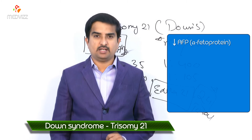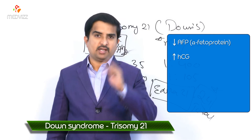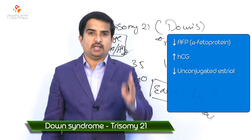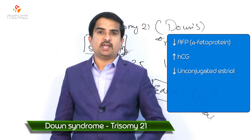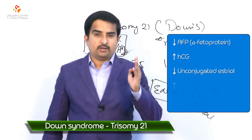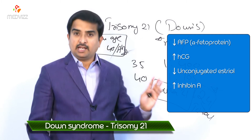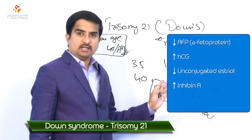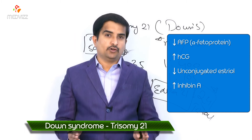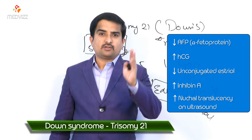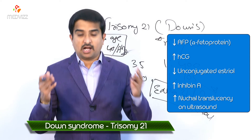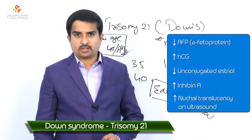The quad screen also shows an increase in HCG, decrease in unconjugated estriol, and increase in inhibin — all visible on the reference table. Additionally, increased nuchal translucency can be detected on ultrasound.